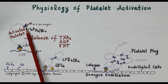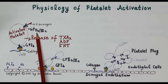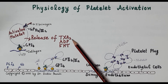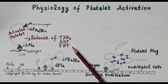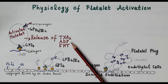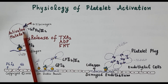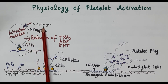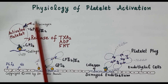Platelets possess a receptor called the GP2b3a receptor, also known as the fibrinogen receptor. Activated platelets release potent mediators of platelet aggregation: thromboxane A2, ADP (adenosine diphosphate), and 5-hydroxytryptamine (5-HT or serotonin). These mediators activate GP2b3a receptors, which — once activated — bind to fibrinogen, and fibrinogen further binds to additional platelets.